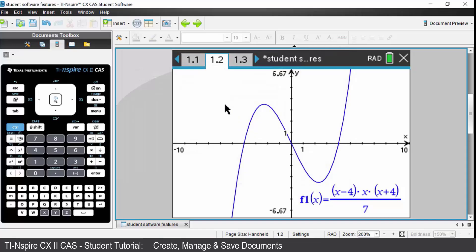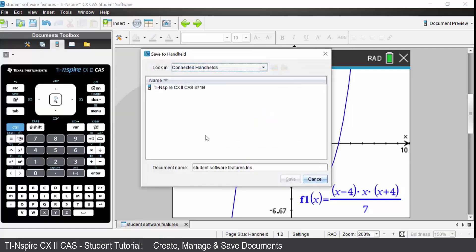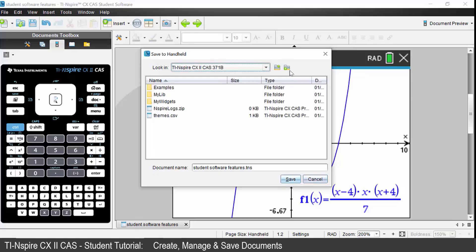You may wish to save the file directly to your handheld. To do that, come to the file menu again and come down to save to handheld. Note that for this operation to work, your handheld must be connected to your computer software via your supplied USB cable. Open your connected handheld. Once again, you could create a new folder, put in the name of the file that you wish to call it, and press save. It will then be saved directly to your handheld.